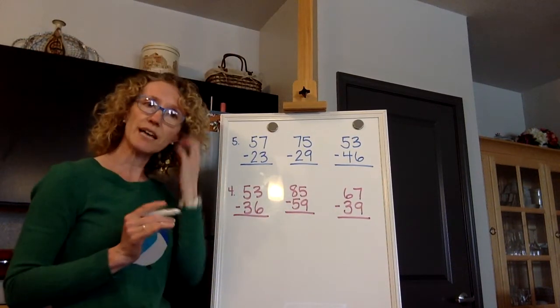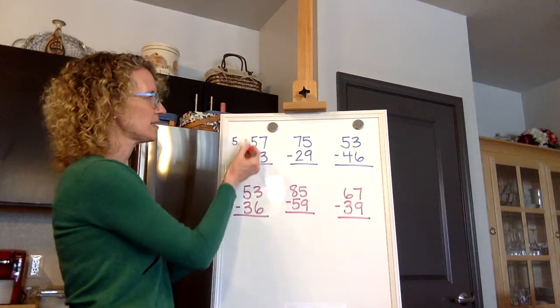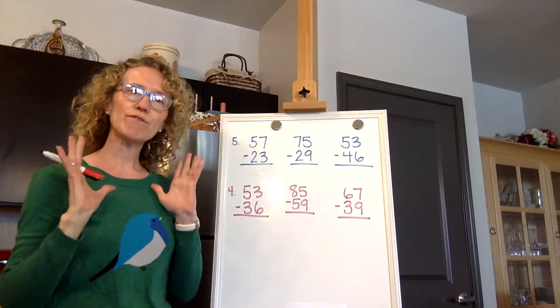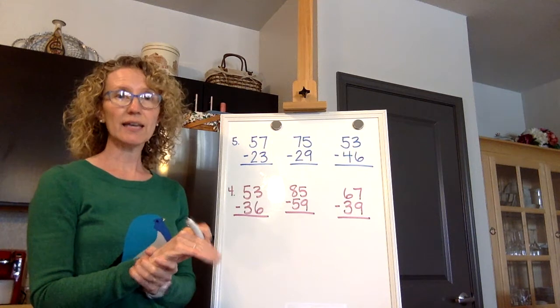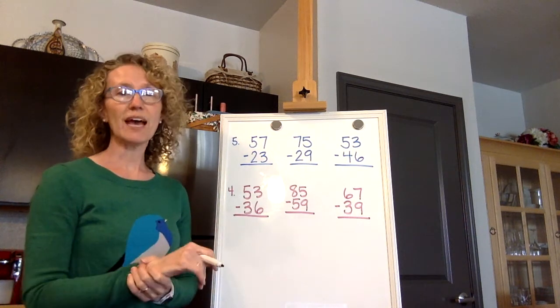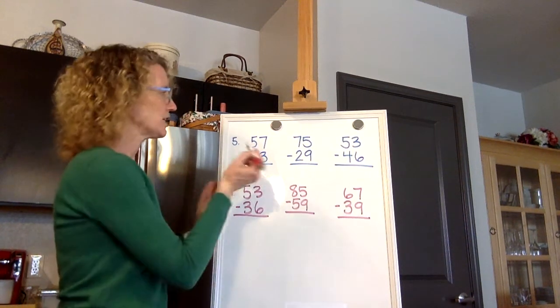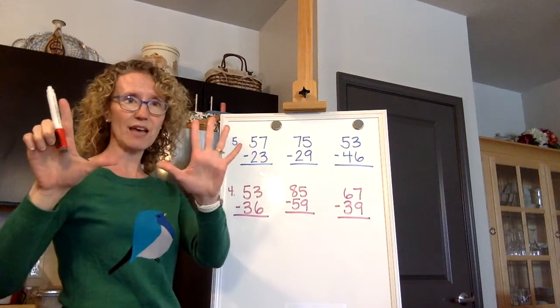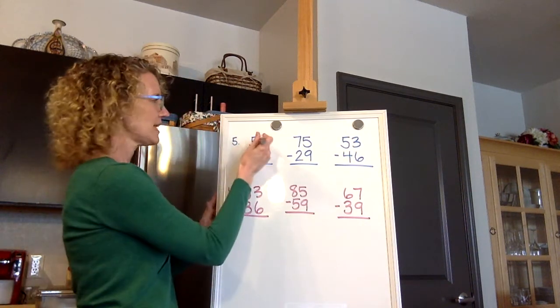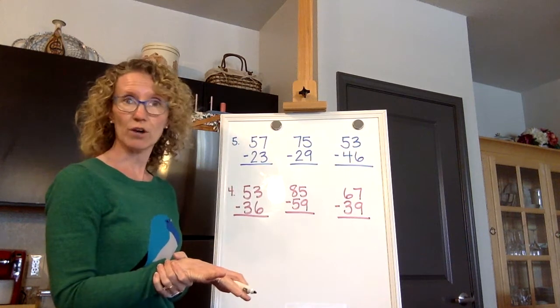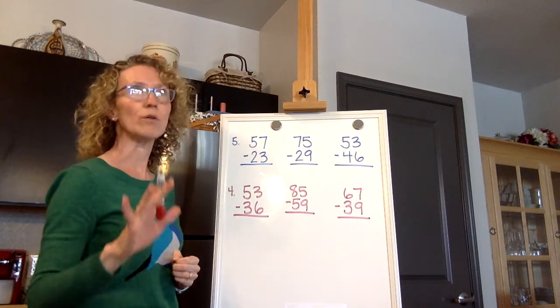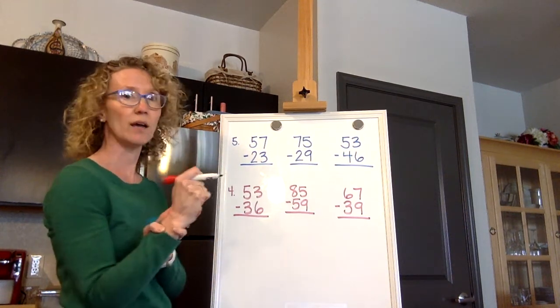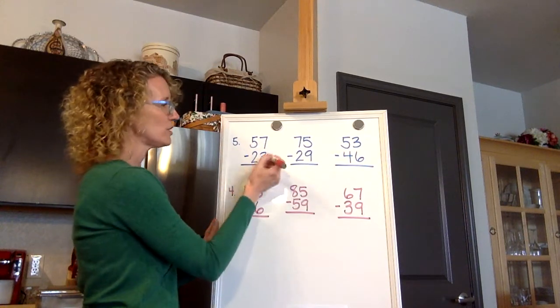You did some pages yesterday where sometimes you had to take some tens and bring them over to the ones column and sometimes you didn't. The same thing is going to happen today. So the first thing you need to ask is, what's your first math problem? It's always the math problem that's in the ones place. Our first math problem is seven minus three. Can you do seven minus three? Yes. Seven minus three is four. So we don't have to do any crossing out and moving ones over. Every problem, in this one we don't. Seven minus three equals four.